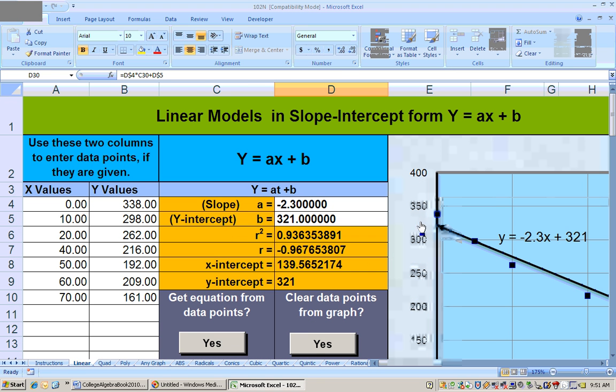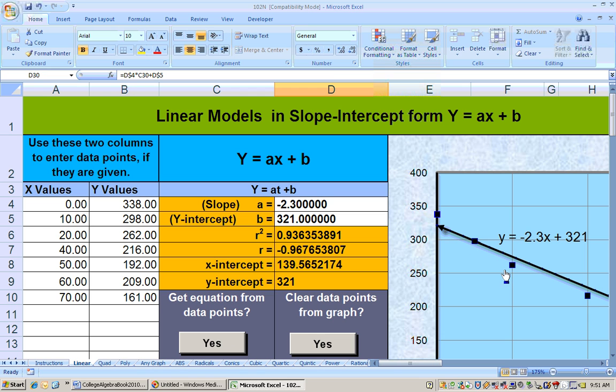It really didn't go down by 2.3 seconds each year. You can see that the actual data points went down by different amounts every year, or every 10 years is how it shows it here. But, according to this model, it's going down by 2.3 minutes every year.